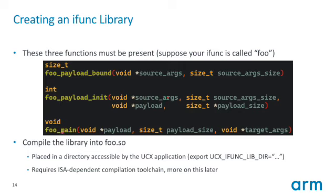The third function is the main function — the entry point to the IFUNC library on the target process. Once the IFUNC message is delivered, the UCX runtime calls this function to begin execution. You don't have to cram all your code into main; you can create other functions as long as they're compiled into the same library. We provide a compilation toolchain to compile the IFUNC source code into a single .so file, which you place in a location accessible by the source process, identified by the IFUNC directory environment variable. Note that this depends on the ISA of both source and target processors, so it is somewhat restrictive.